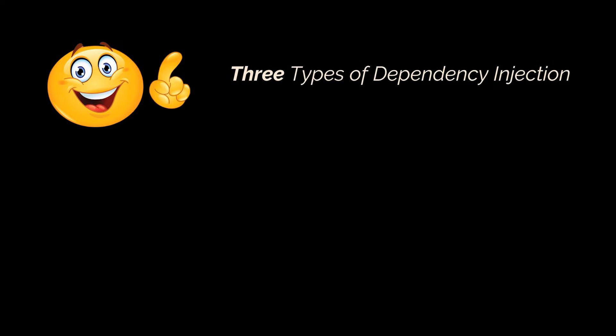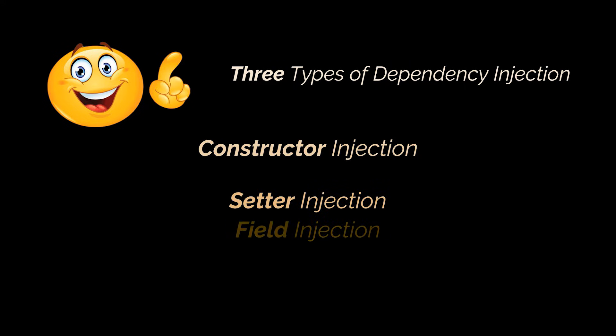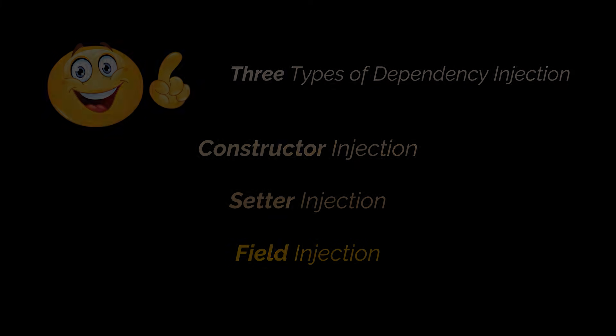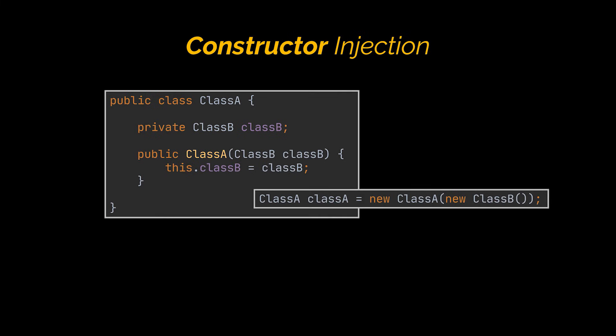Okay, with that said, you need to know that there are actually three types of dependency injection: the constructor injection, which is the one we just saw, the setter injection, and the field injection. Let's break them down. In the constructor injection, the dependencies are provided through a class constructor. In the example you see, we provided the class we depend on via the constructor while initializing our main object.